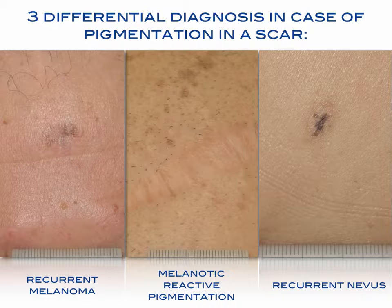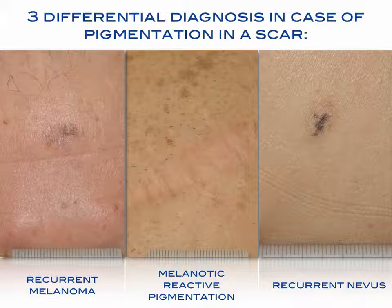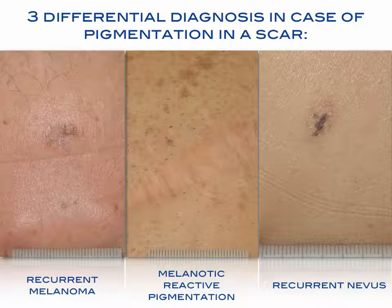Welcome to this podcast on differential diagnosis in case of a pigmentation in a scar. In case of a pigmentation in a scar, we have mainly three differential diagnoses. The first is recurrent melanoma, then recurrent nevus, or melanotic reactive pigmentation.